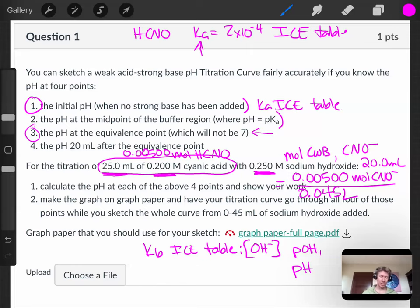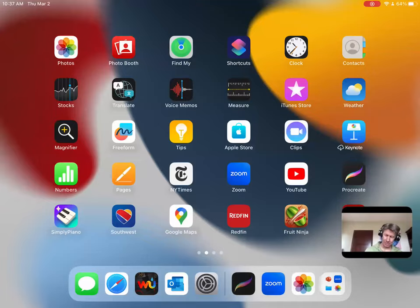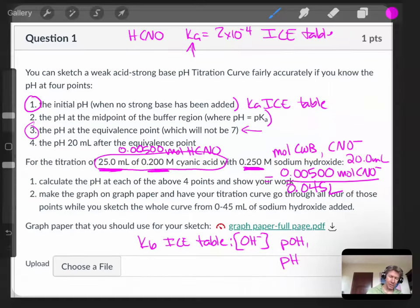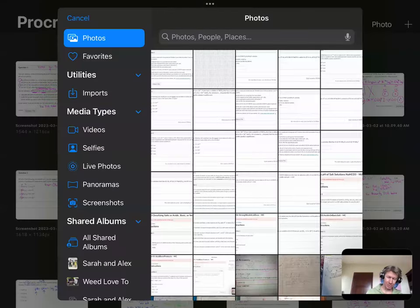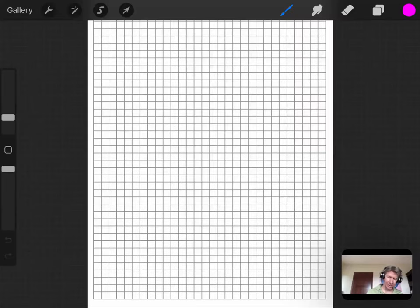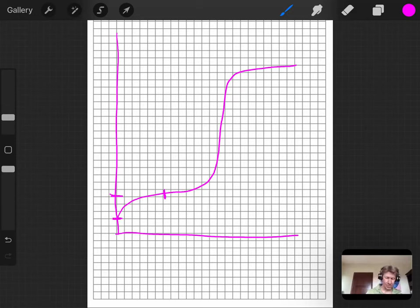And then you're going to put it all on a graph, and the graph will look something like this. Well, you're going to make yours look very nice and pretty, but you're going to have a graph. And, of course, it's going to look something like this, where the pH at the middle will be your value over here. The pH at the beginning will be your value right there. The pH at the equivalence point, which for a weak acid strong base titration, will be higher than 7. So work that out, as you'll see, and then you'll have a point up here somewhere, 20 milliliters past the equivalence point. And your graph will be drawn very nicely.